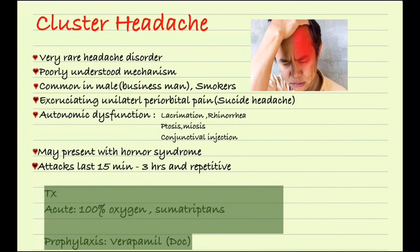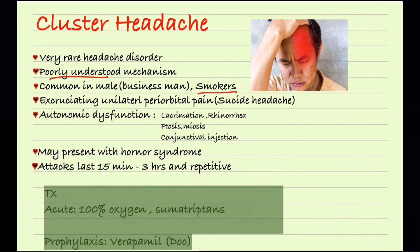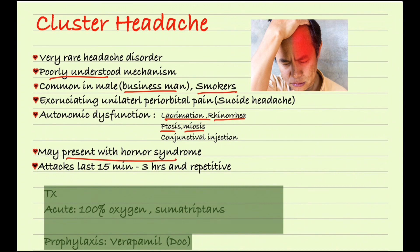Cluster headache is a very rare headache disorder. The pathophysiology is poorly understood, but this type of headache mainly presents in males who smoke. The patient's main complaint is unilateral headache behind the eye, and it is sometimes present with autonomic dysfunction such as lacrimation, rhinorrhea, ptosis, miosis, and conjunctival injection — and may present with Horner syndrome.